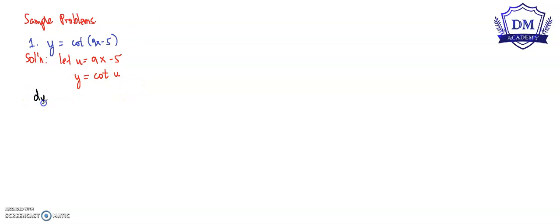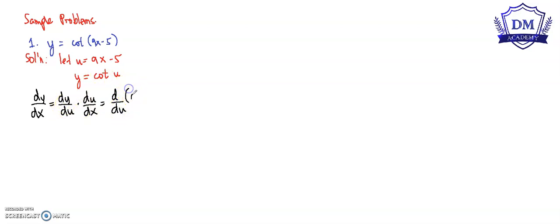So we have dy over dx is equal to dy over du multiplied by du over dx. That is equal to the derivative of y with respect to u — our function y is cotangent u — multiplied by the derivative of u, which is 9x minus 5, with respect to x.